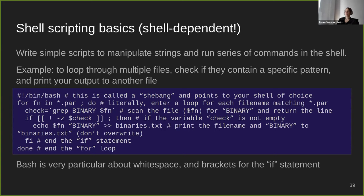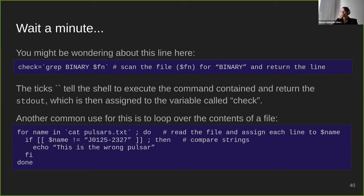So all that script does is loop through files, check if a specific pattern exists, and if it does, print the filename and the pattern 'binary' to a different file. A few more gotchas: bash is very particular about whitespace and brackets; double square brackets for if conditions with spaces on either side should always work. The backtick syntax returns the standard output of a command to a variable. Another common use is to loop over the contents of a file — you can extract it using something like cat and assign that to a variable name using backticks.